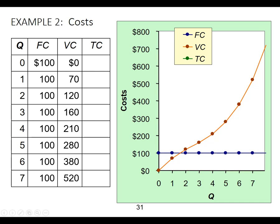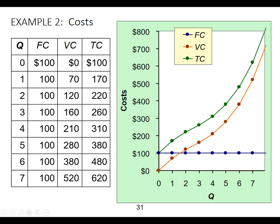Total cost is going to be fixed cost plus variable costs. So it's going to be $100, $170, $220, and so on. This one is going to increase also. Fixed cost equals variable cost plus total cost — so if we go to quantity 2, we've got 100 plus 120, we should end up at 220. This plus this is going to equal this. The total cost curve is going to always be above the variable cost curve because we're accounting for that constant fixed total cost.